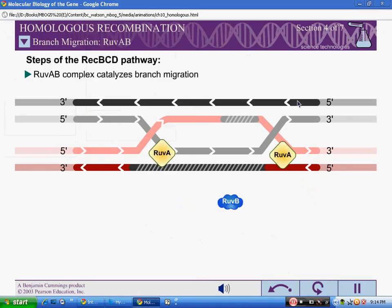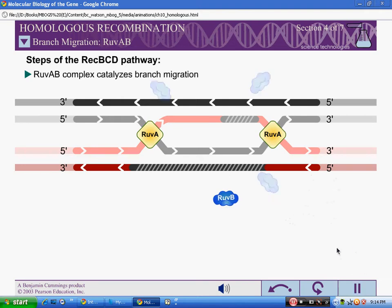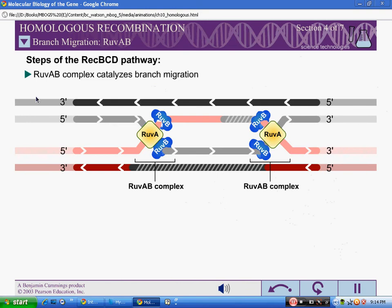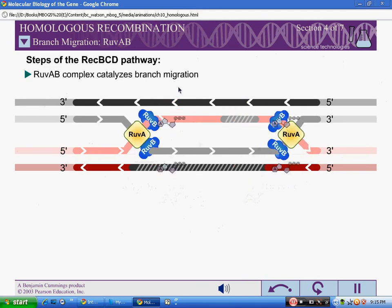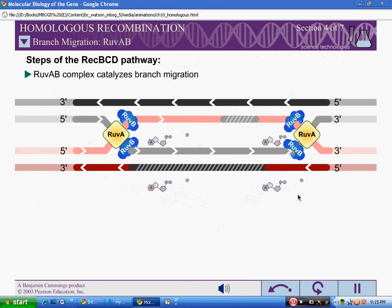RUVA protein is a DNA binding protein that recognizes the gross structure of the Holliday junction regardless of its specific DNA sequence. RUVA recruits two hexamers of RUVB to each Holliday junction to form RUVAB complexes. RUVB is an ATPase, and ATP provides the energy to drive the exchange of base pairs during branch migration.